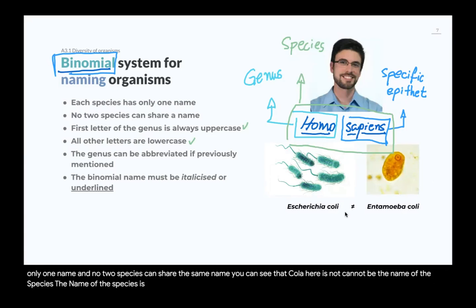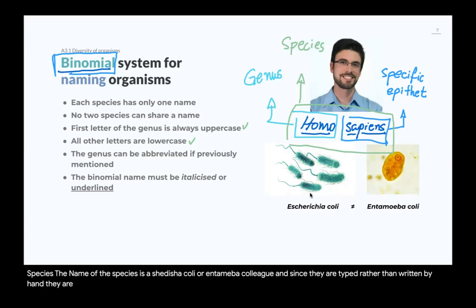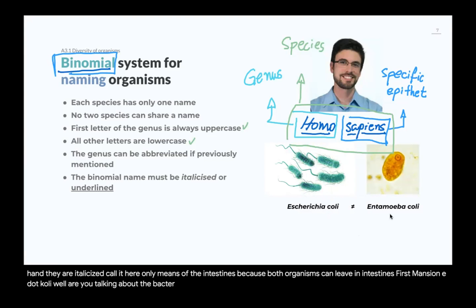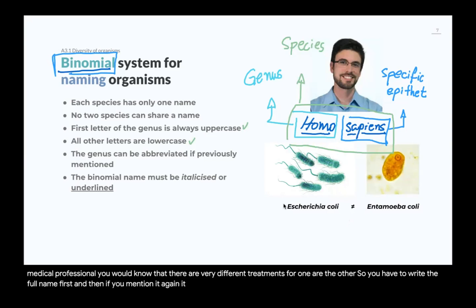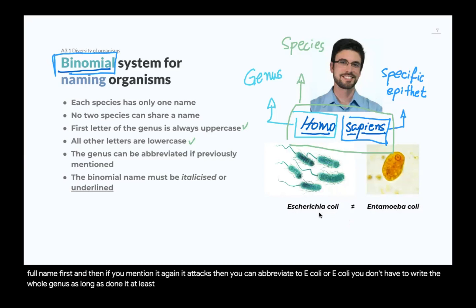Since each species has only one name and no two species can share the same name, 'coli' here cannot be the name of the species. The full names are Escherichia coli and Entamoeba coli — typed rather than handwritten, so they are italicized. 'Coli' only means 'of the intestines,' since both organisms can live in intestines. If you're a medical professional, the treatments are very different. So you write the full name first, and then you can abbreviate to E. coli subsequently.